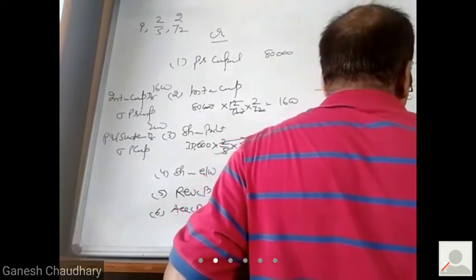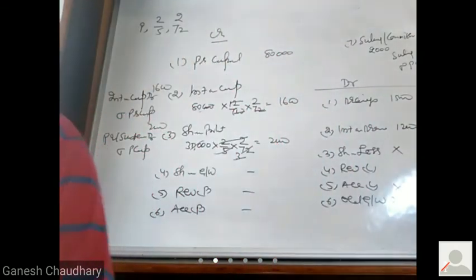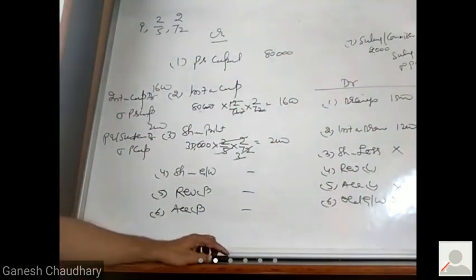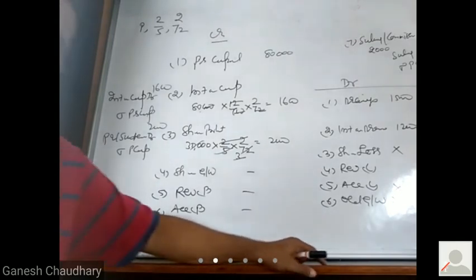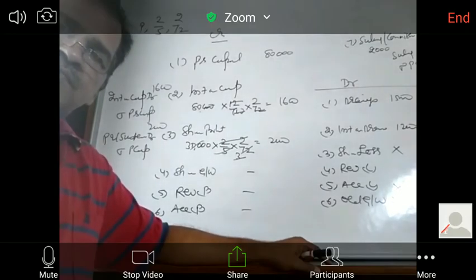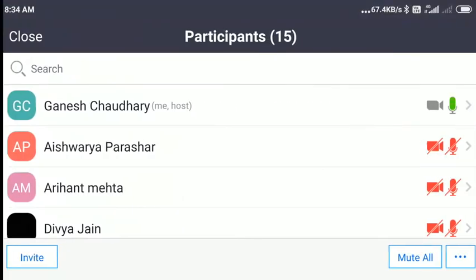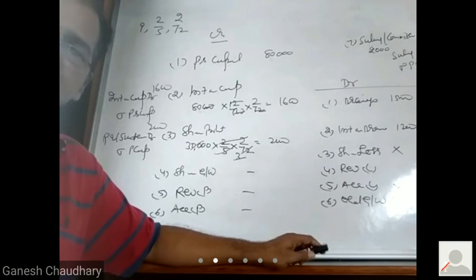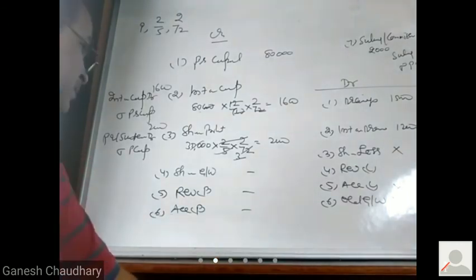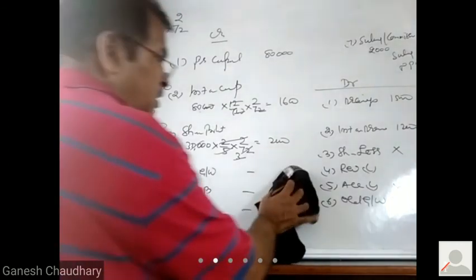1200. Do it, complete. Now your account needs to be made. Yes, account. Now make the account.